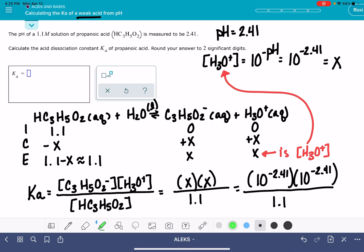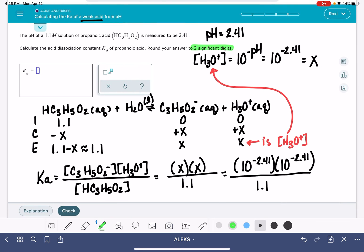ALEKS is being pretty lenient here. It only wants us to have two significant figures, so that means it's going to give us quite a bit of wiggle room for getting the answer a little bit wrong. 10 to the negative 2.41, and I'm squaring that, and then I'm dividing it by 1.1. On my calculator, I get, if I've put these numbers in correctly, 1.4 times 10 to the negative 5. There are no units on Ka.